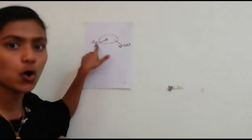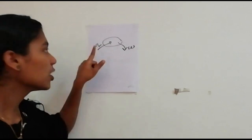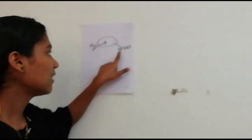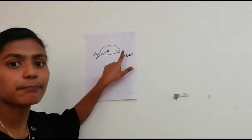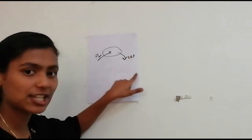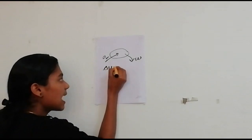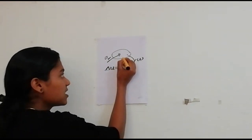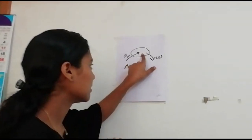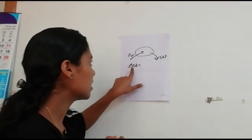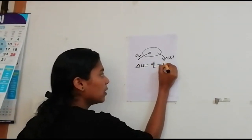Q is positive when heat is gained by the system, and negative when heat is lost by the system to the surroundings. Work done W is positive when done on the system, and negative when done by the system. And delta U is invariably the internal energy change that occurs in the system, which we call delta U. And the relation is Q minus W.